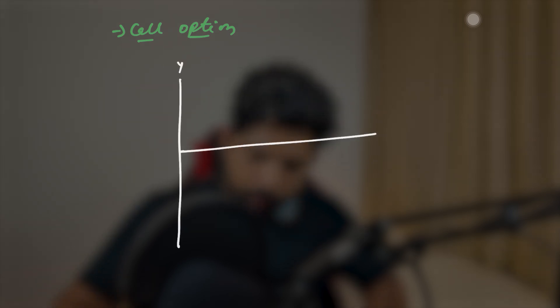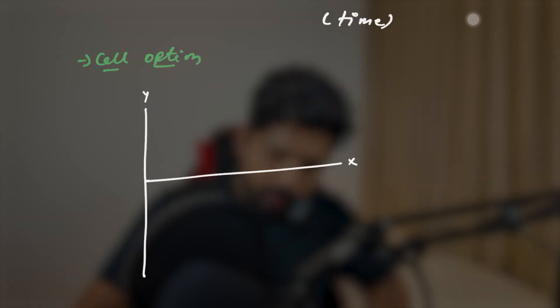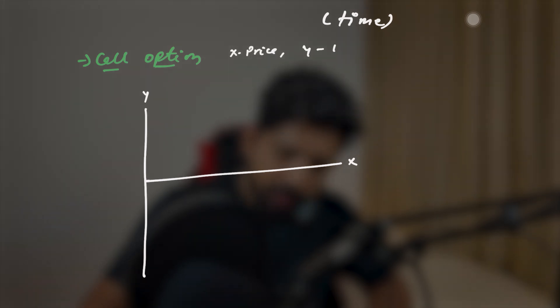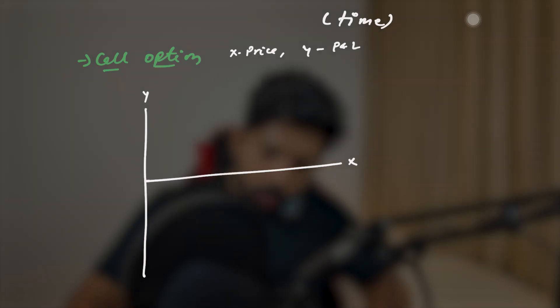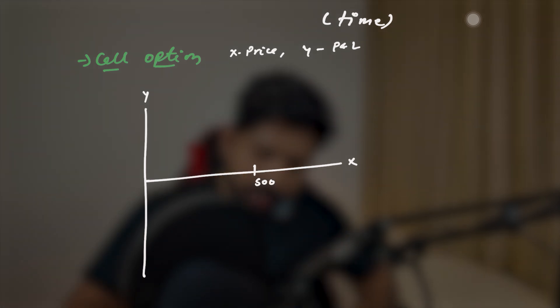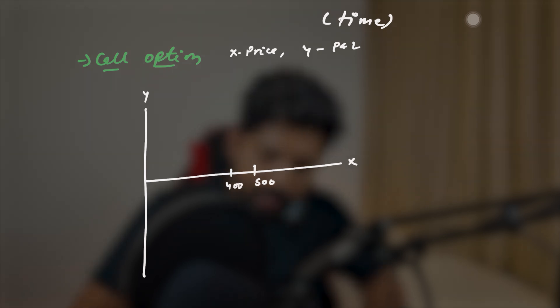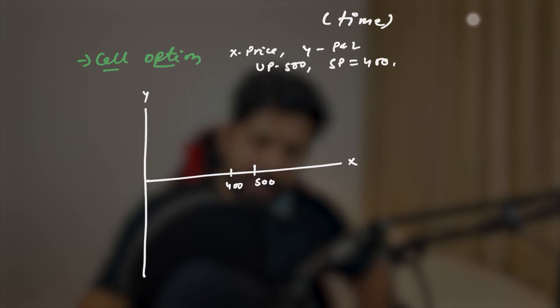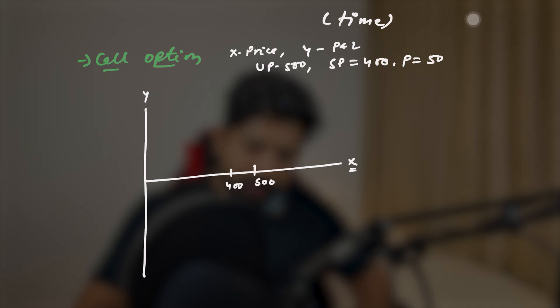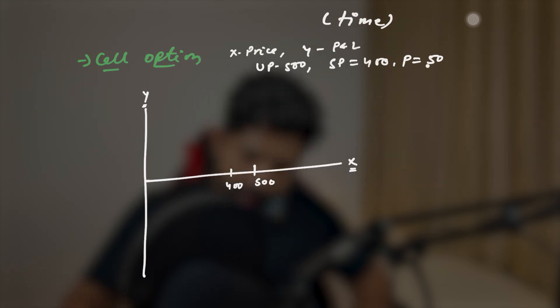Let's understand this with a call option example. On the chart, the x-axis is price and the y-axis is P&L. Let's say the underlying price is 500, the strike price (SP) is 400, and the premium is 50 dollars. When you buy the call option, by default you are in a loss of 50 dollars — the cost of the premium. So on the chart we mark negative 50 and positive 50.